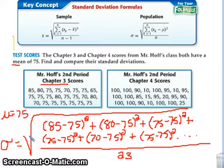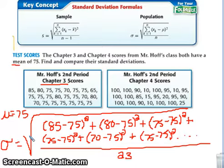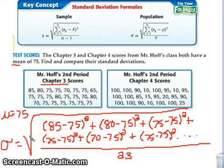With 23 numbers, you're going to have to subtract 23 times, square 23 times, then add all 23 numbers together — that's 69 different places where you could make a mistake. So it's better to listen today and figure out how to find the standard deviation on your calculator.